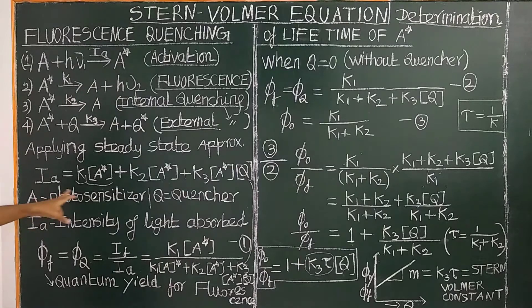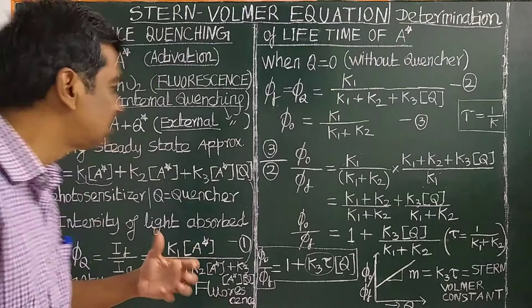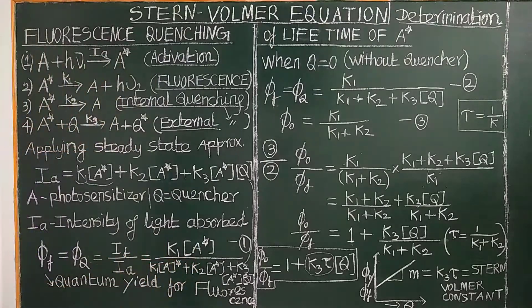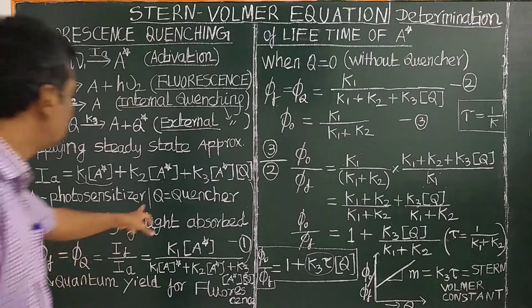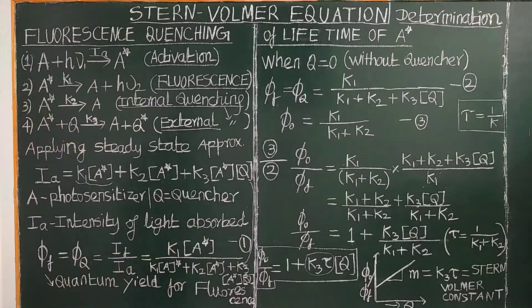A is called the photosensitizer. A well-known photosensitizer is chlorophyll. Chlorophyll is a well-known photosensitizer and oxygen is a quencher in photosynthesis.